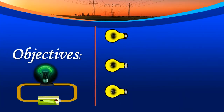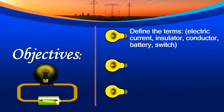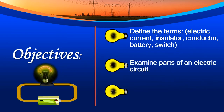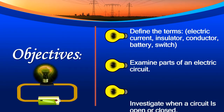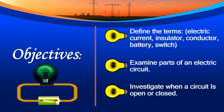At the end of this lesson, we should: 1. Define key vocabulary terms. 2. Examine parts of an electric circuit. 3. Investigate when a circuit is open or closed.